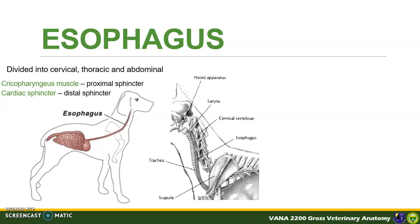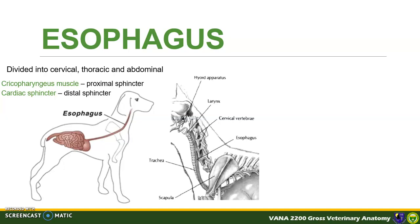In the neck, the esophagus lies dorsal to the trachea, then shifts to the left of the trachea as you can see on this image. Inside the thorax, it returns to a position dorsal to the trachea, passing over the tracheal bifurcation. The esophagus then enters the abdominal cavity via the esophageal hiatus of the diaphragm.